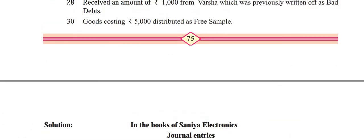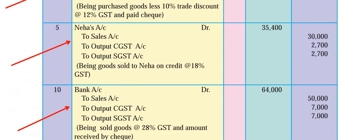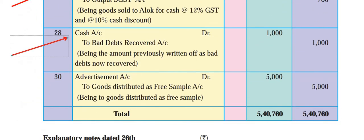Next entry is the final one. 30th April: goods costing 5,000 distributed as free samples. This is advertisement - you are investing goods to expand the business. So advertisement account debit 5,000, and goods distributed as free sample account credit 5,000. Narration: being goods distributed as free sample.